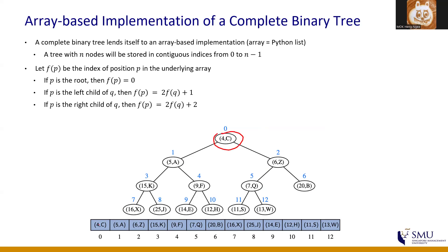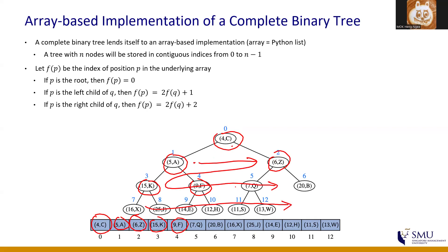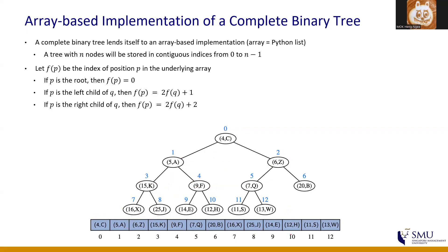The root is always stored at position 0. The two children of the root are at positions 1 and 2 respectively. We fill the list level by level from left to right. Because there are no gaps in the CBT except the last layer, we can fill the 1D list very nicely. The length of the list tells you how many gaps there are on the lowest level, and it becomes easy to determine the positions of left child, right child, and parent.